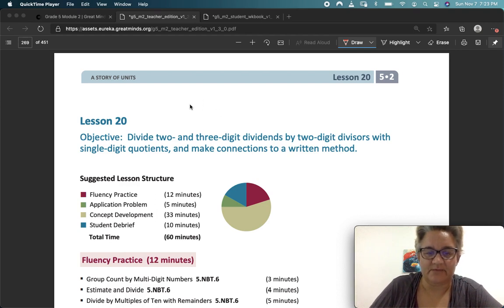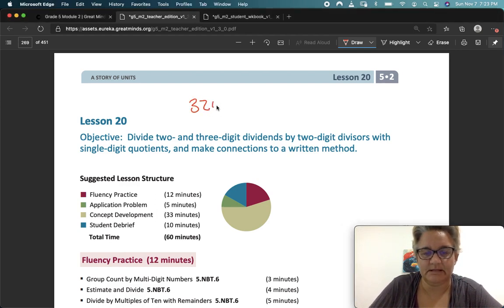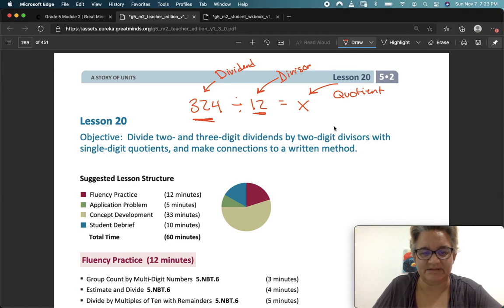So as you recall, if we have a number and we divide it by another number and we get an answer, this is called the dividend. This is called the divisor, and the answer is called the quotient. So if we're talking about two- and three-digit dividends, three digits there, two-digit divisors, two digits here, with single-digit quotients, you get the idea.